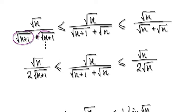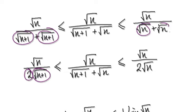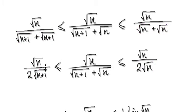So this thing here will always be trapped in between here and here. Now tidy this up — exactly the same plus exactly the same, so you're going to get two lots of exactly the same. So now take the limit of this as n tends to infinity.